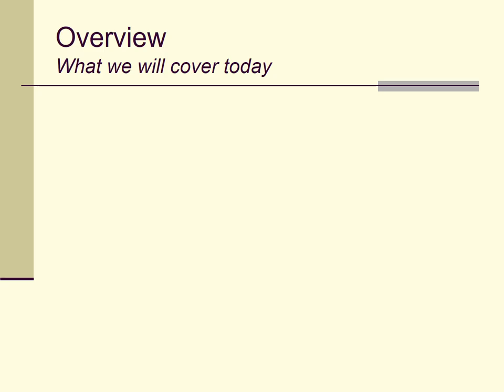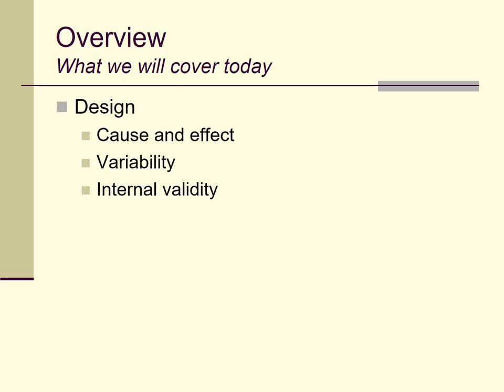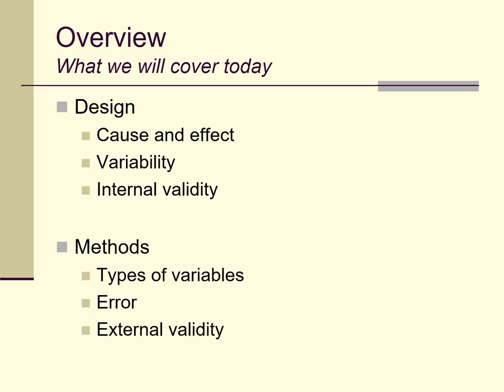Here's an overview of what we're going to cover today. I'll talk about research design, specifically focusing on how we evaluate claims of cause and effect — something we think about a lot in the sciences, especially the behavioral sciences. I'll also discuss research methods, including different types of variables, different ways of evaluating error especially measurement error, and the distinction between internal and external validity of claims made based on research.